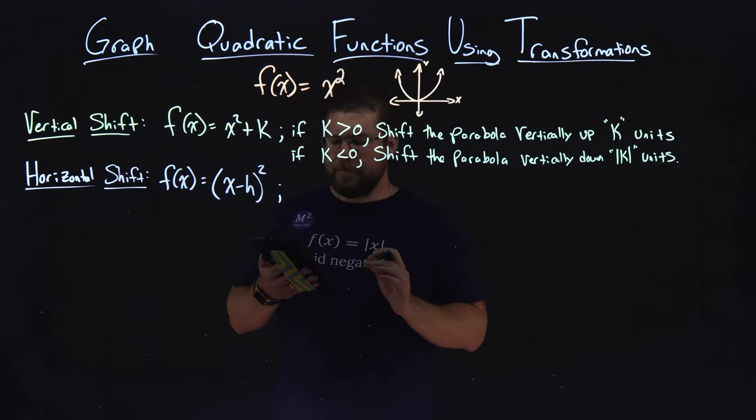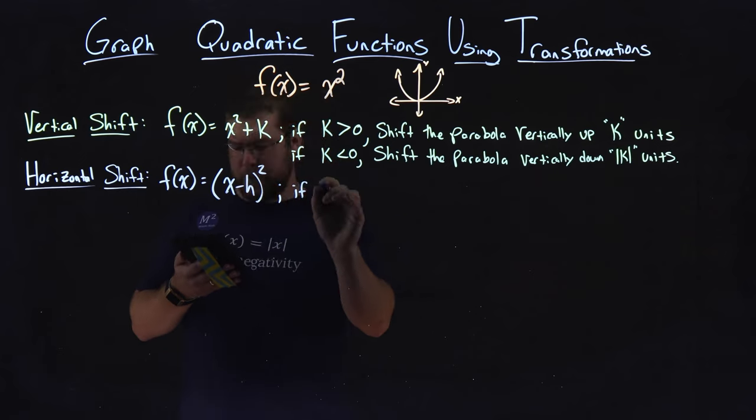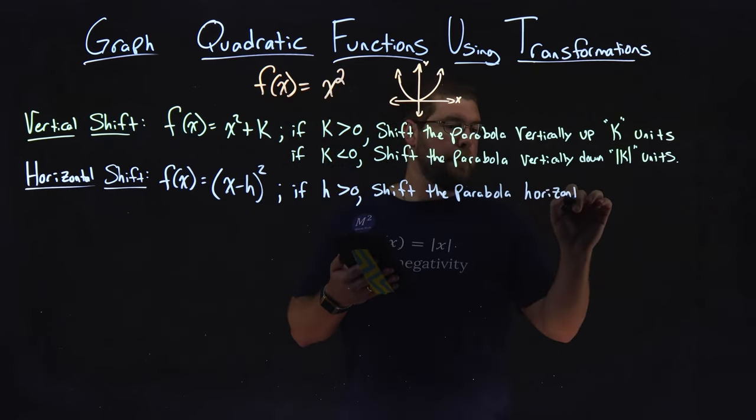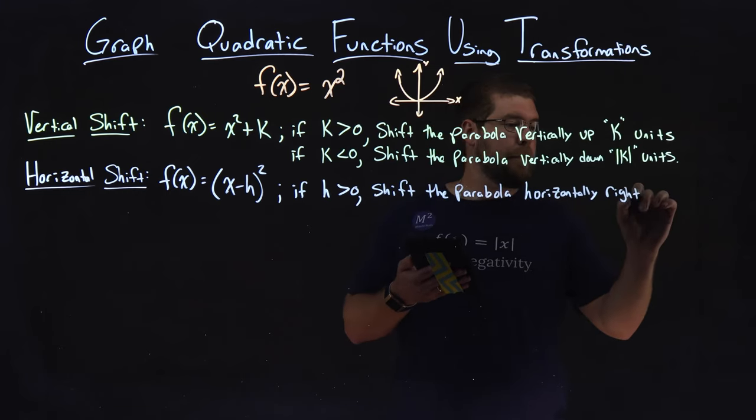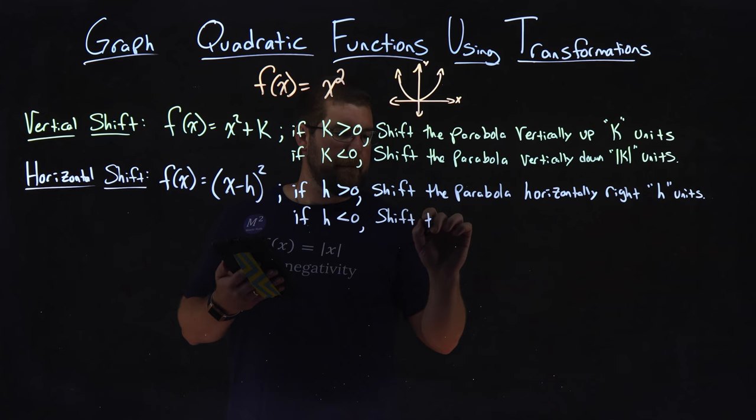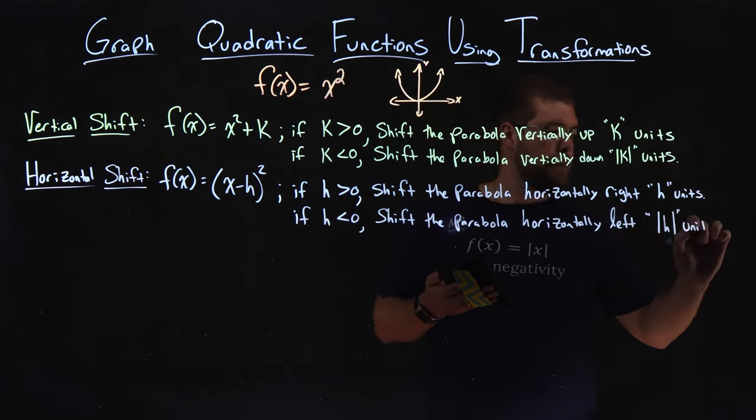Now, it's a little tricky here. Let's go see what the rules are. If h is greater than zero, shift the parabola horizontally right h units. If h is less than zero, shift the parabola horizontally left absolute value of h units.